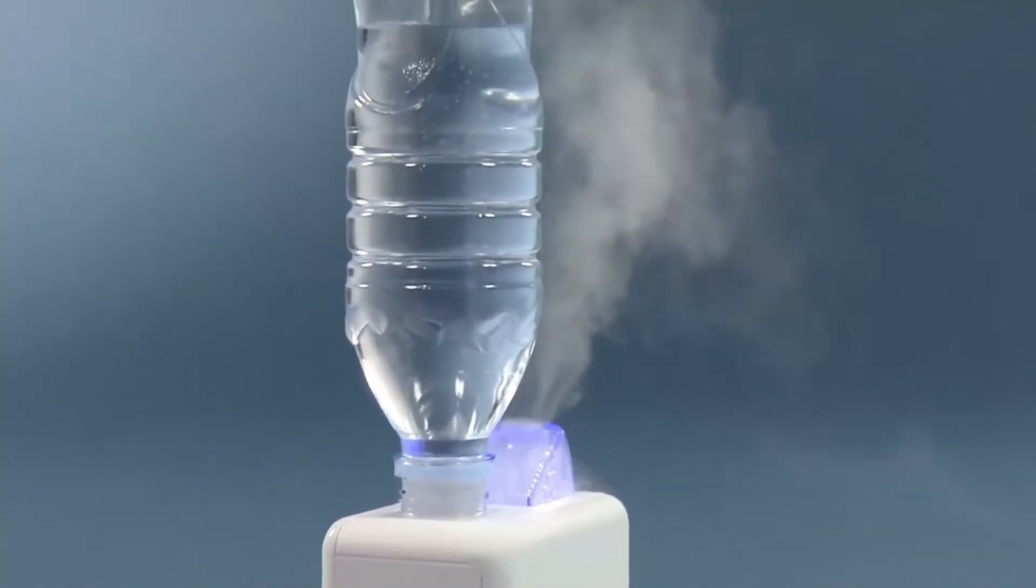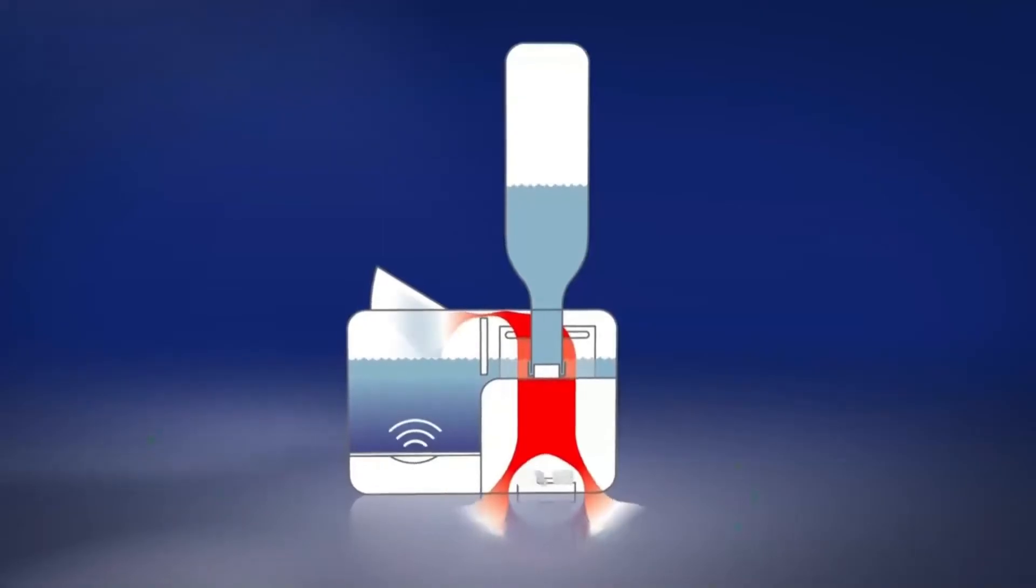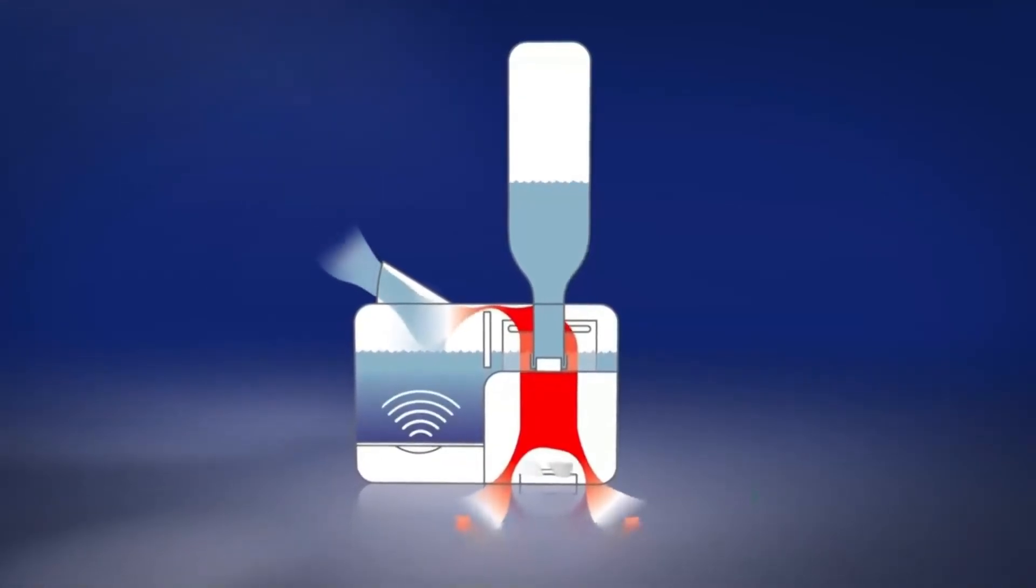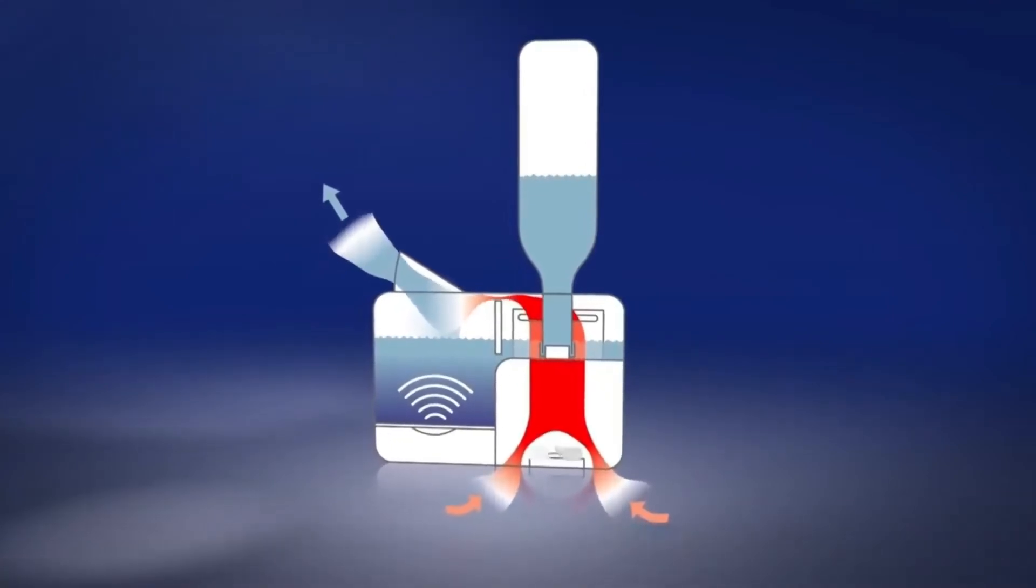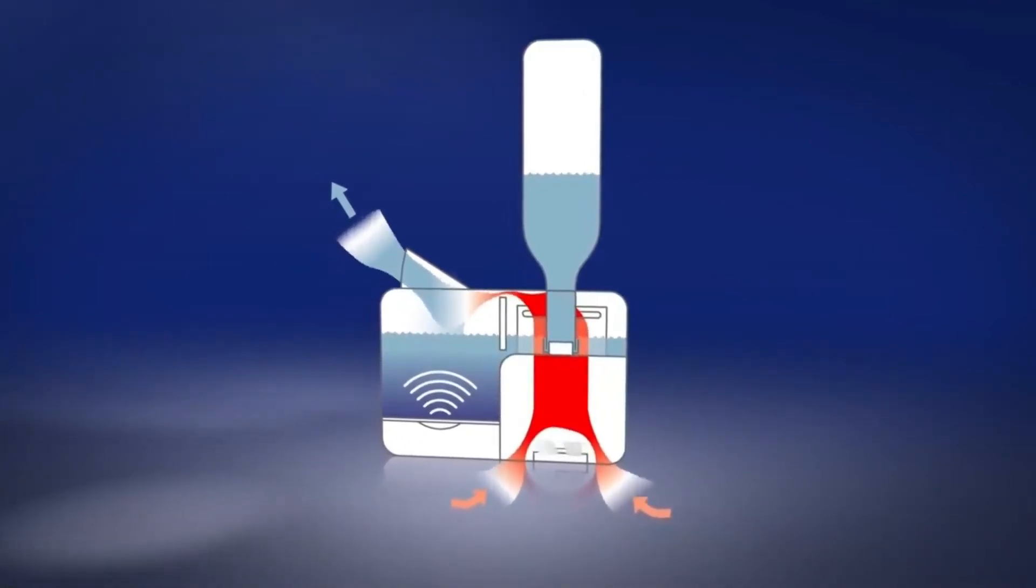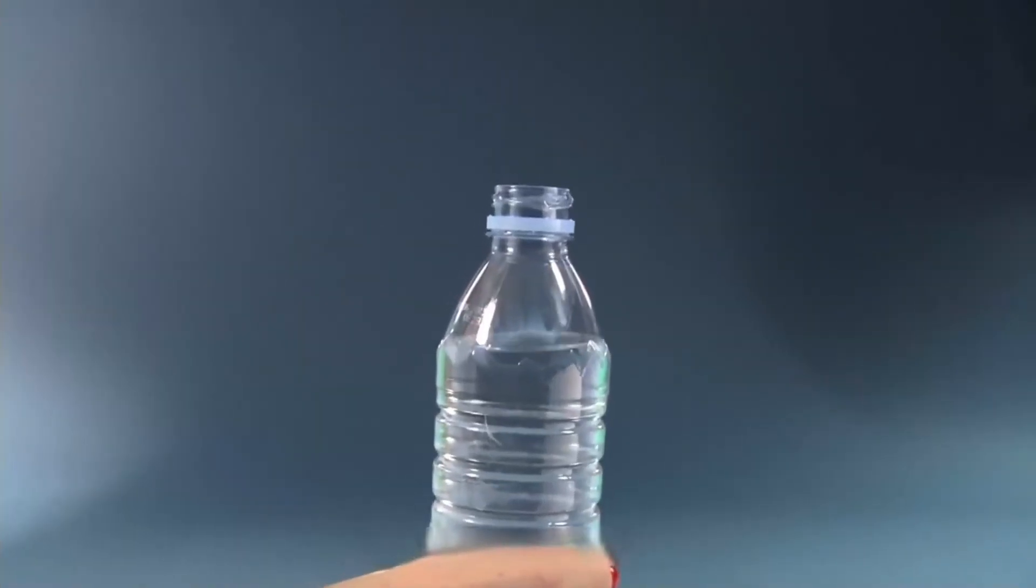Ultrasonic humidifiers require very little space for the atomizer. It can be designed smaller, so it's very compact. In addition, ultrasonic humidifiers are quieter. It only makes a slight humming sound and it doesn't use any heat to produce the mist. It is also safer to use.